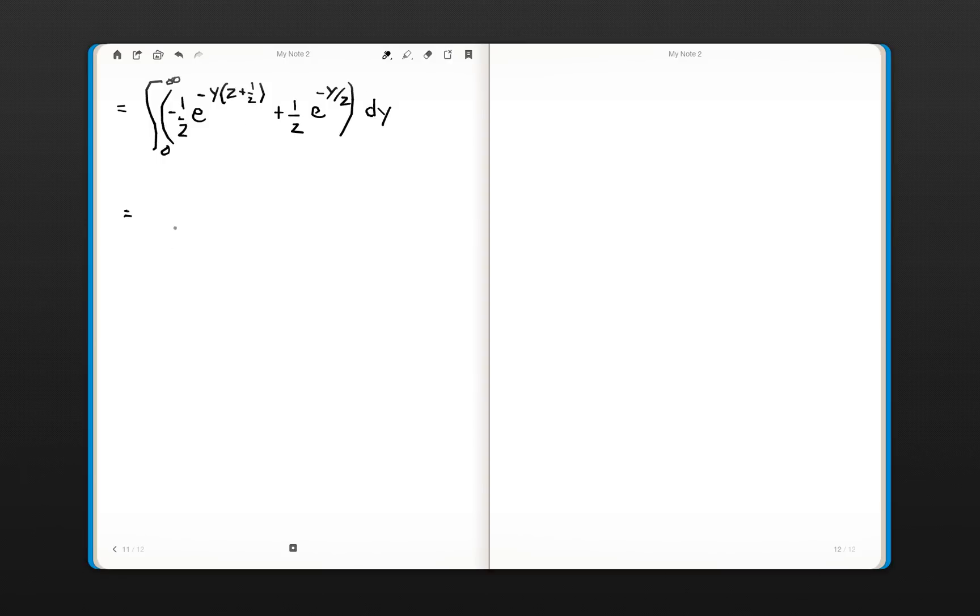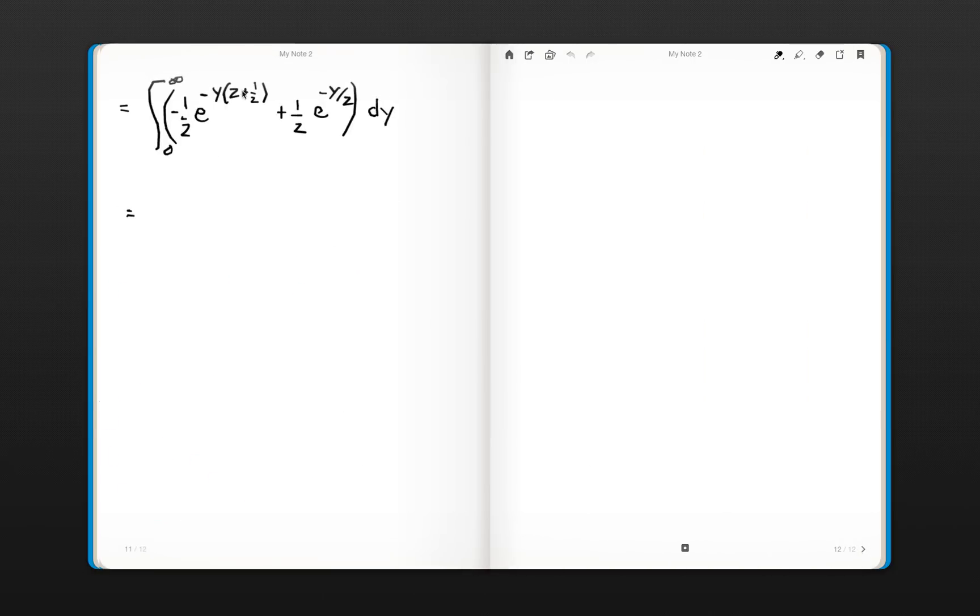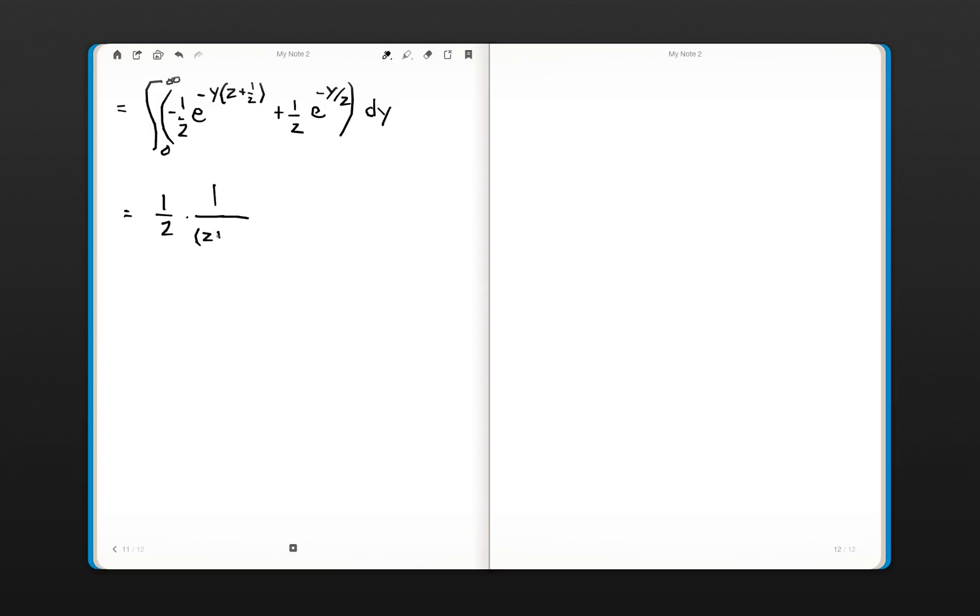So it looks pretty intimidating at first. But we're going to apply a rule that we saw over here. Again. Integral e^(mx) where m is a constant is equal to 1 over m e^(mx). And our m here is actually equal to Z plus 1/2. Because that's really the constant. Z is not a variable here. So when you apply that and you make sure you get the algebra right. These problems are going to be pretty tedious. You end up with 1/2 times 1 divided by Z plus 1/2.